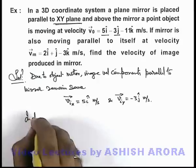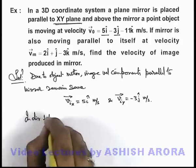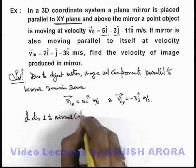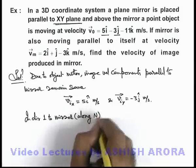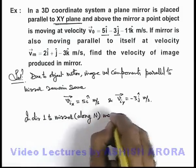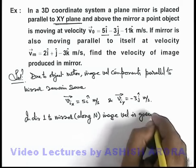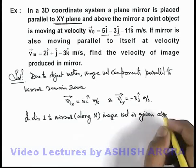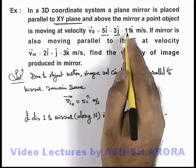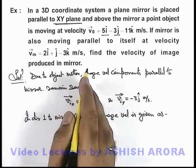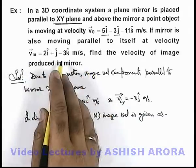And in direction perpendicular to mirror, which is also written along normal, image velocity is given as: we know that due to object motion, image velocity is exactly opposite to the object velocity, and due to mirror velocity it is twice that of the mirror velocity.